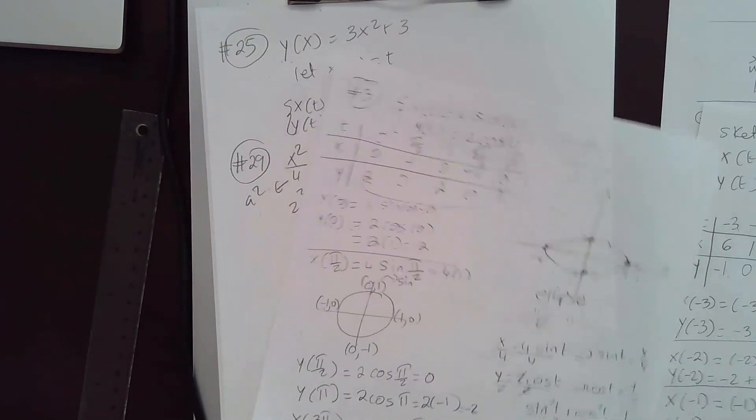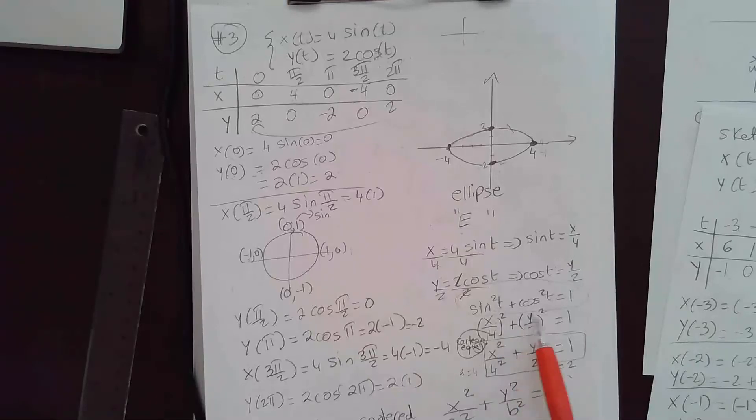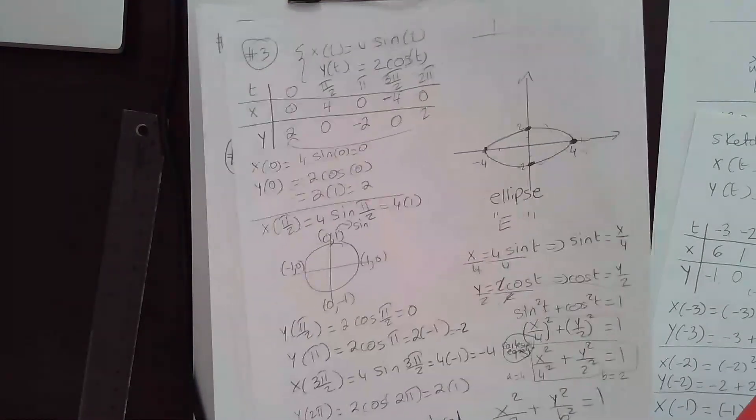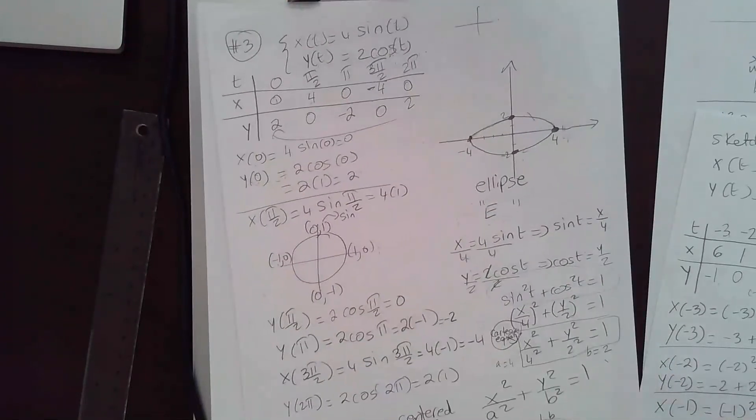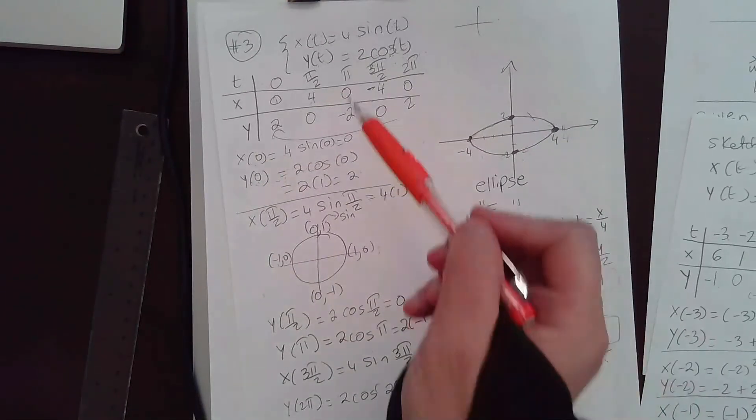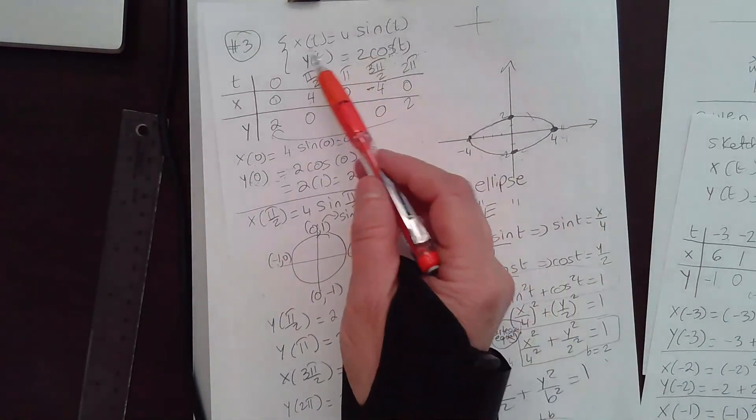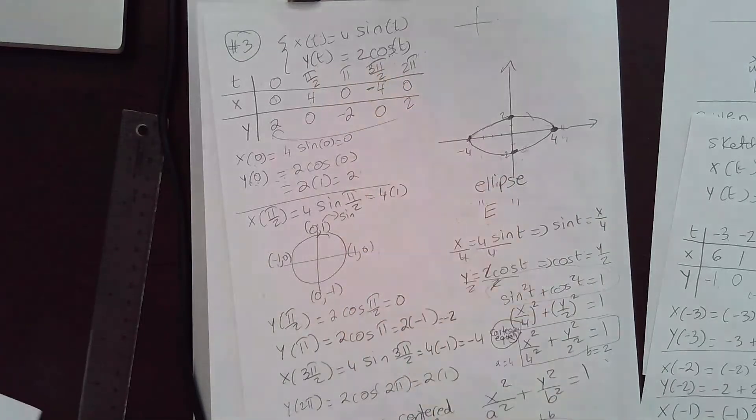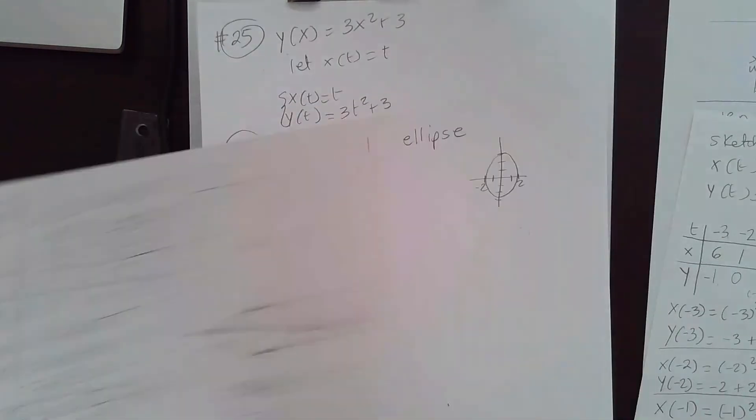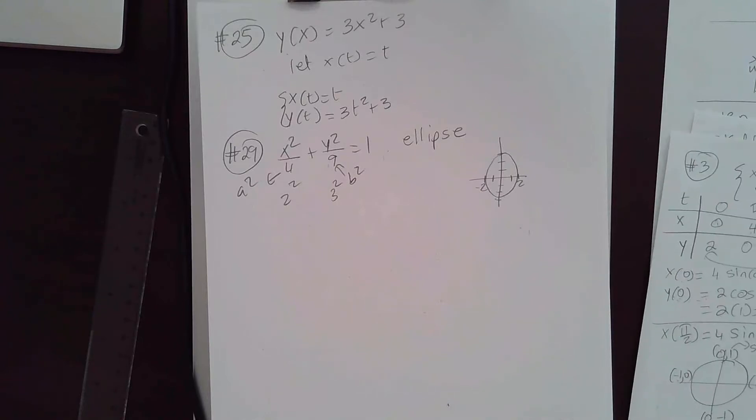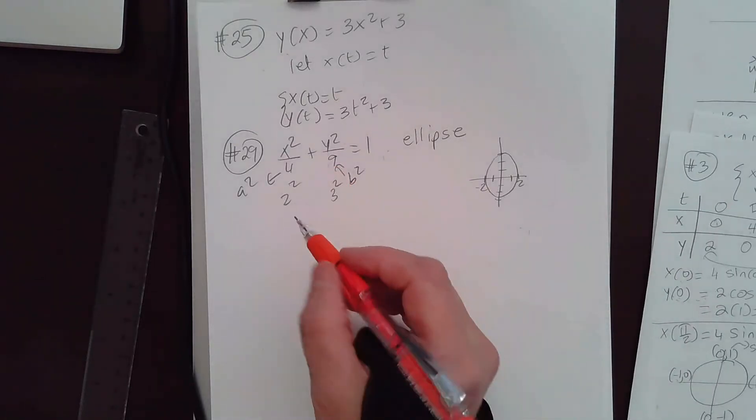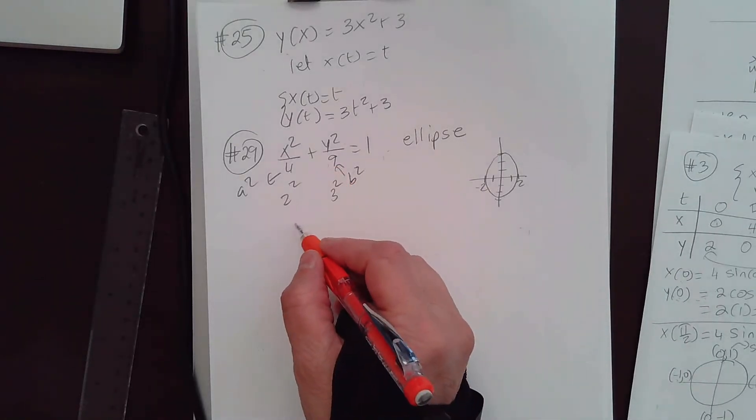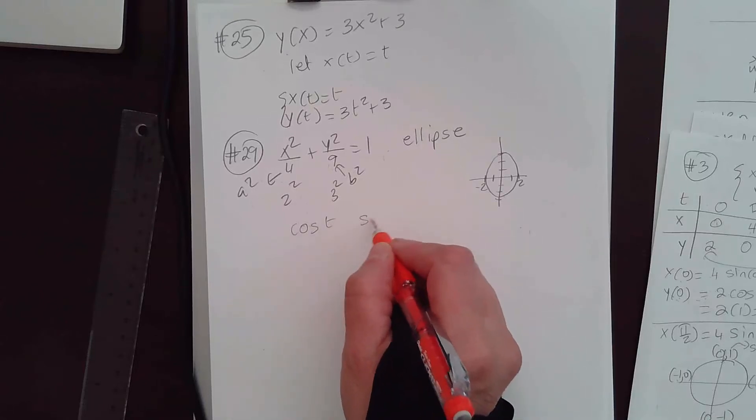Remember, we did an example. If I can just look it up. There it is. So, a variation of sine t and cosine t. Remember, and we use the formula sine squared t plus cosine squared t equal to 1 to be able to write a Cartesian equation.